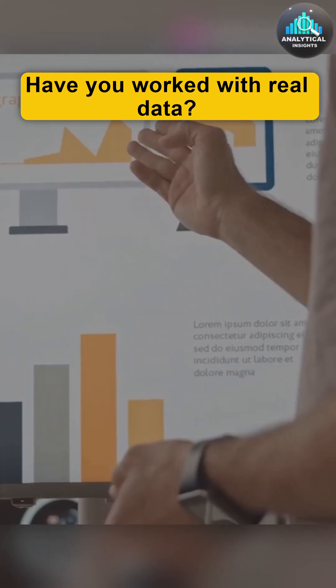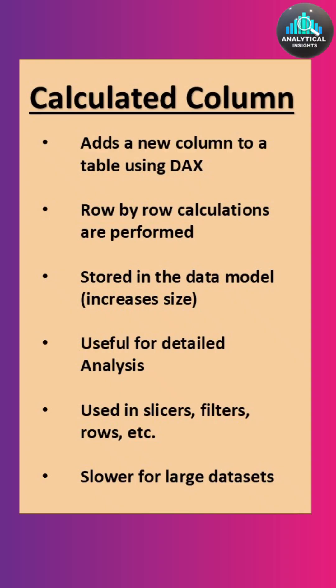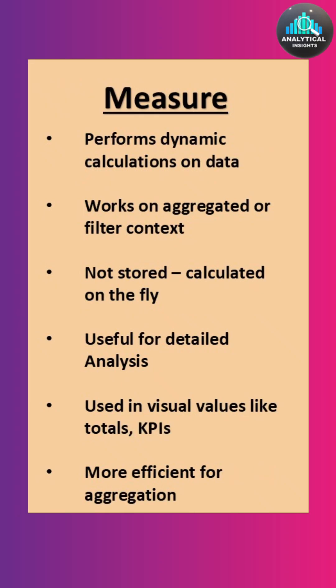Always give your answer with an example like this. A calculated column is like adding a new column in Excel — it gives you a value for each row. Calculated columns are used when you need row-level calculations. A measure is like a formula that gives you a total or a summary, like total sales or average profit. Measures are used for aggregating values like sum or average.